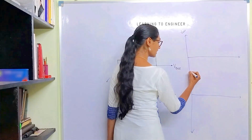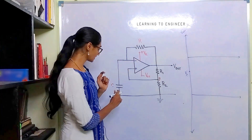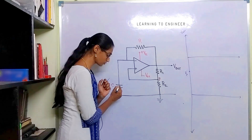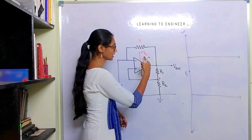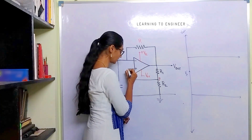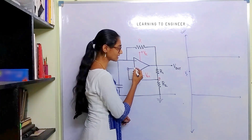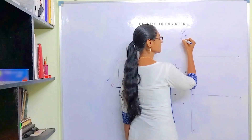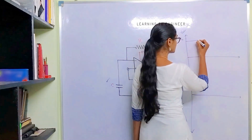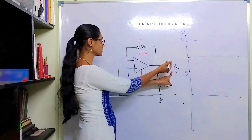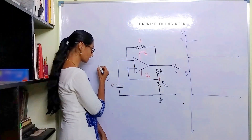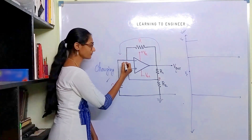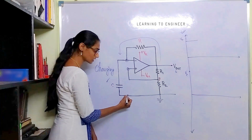Here I will draw the output voltage and the Vc, or capacitor voltage. Initially let us assume the capacitor is completely discharged — it does not have any charge. We can consider it to be an open circuit. Let us say plus Vcc is making the positive terminal have a higher voltage compared to the negative terminal, and as a result of this positive feedback you will have an output voltage which is positive, closer to plus Vcc. As long as there is a positive output, this voltage will be applied across the capacitor and the capacitor will start charging. The feedback network is provided by the resistor, so the capacitor will start charging towards this positive voltage.